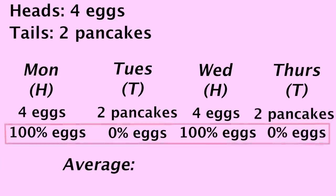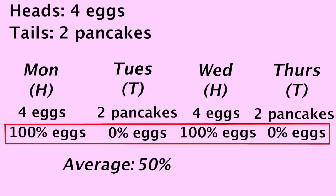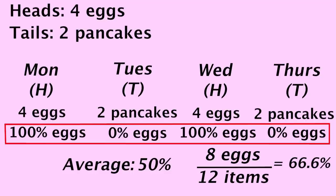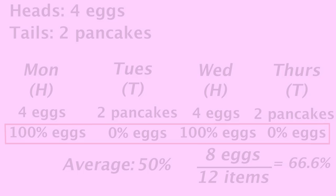So the average of those percentages is 50%. That means on average, the percentage of items that are eggs is 50%. However, in total, we've eaten 12 items, and 8 of them were eggs. On average, you eat more eggs than pancakes, yet the average percentage is another story. And this is the very subtle issue with the population problem.